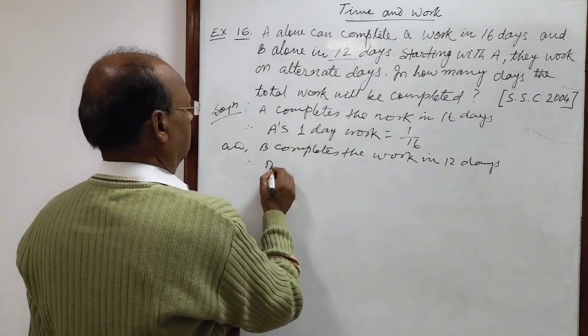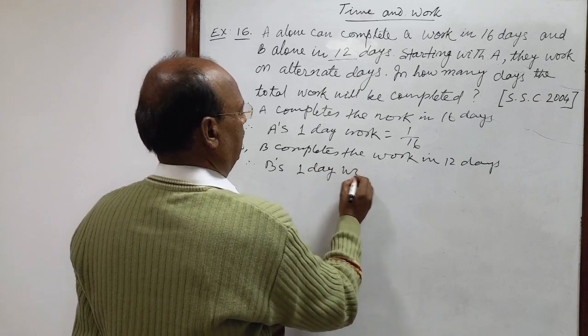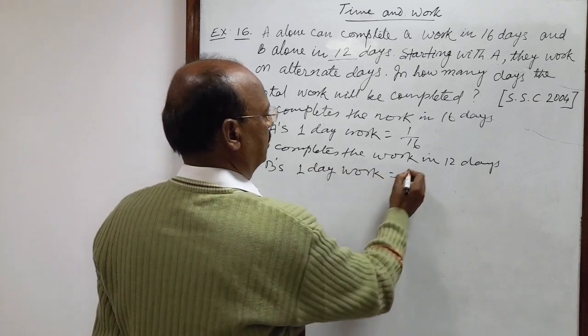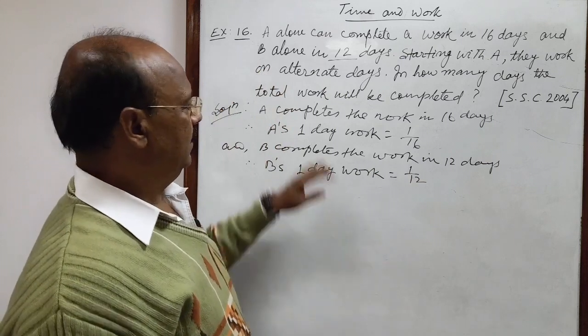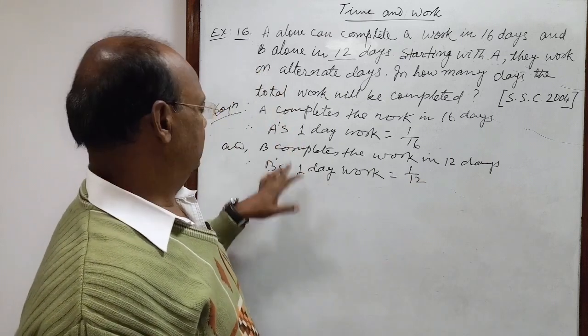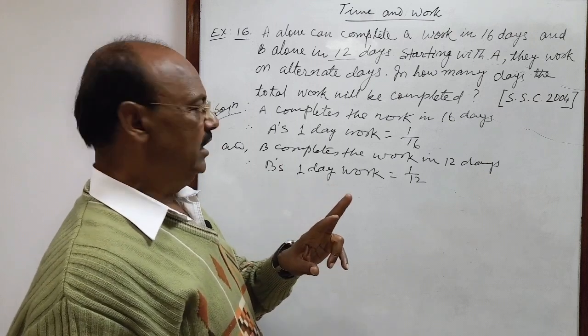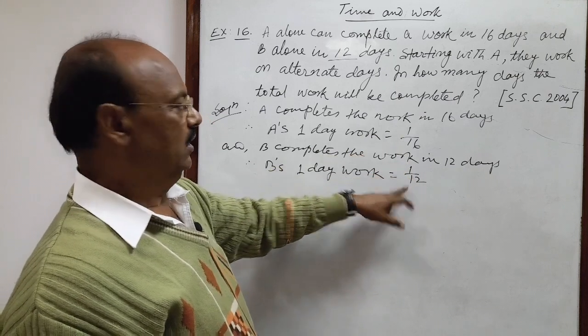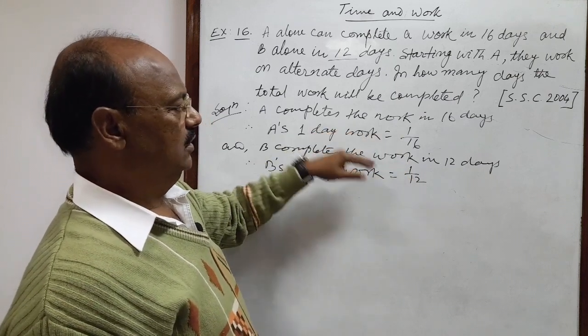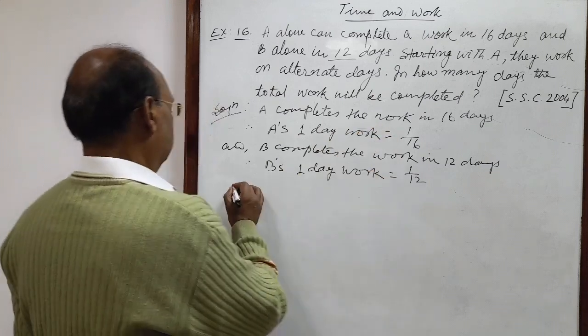Therefore B's one day work is 1/12. First day A works, second day B works. So in two days total amount of work done will be 1/16 plus 1/12. This is work done on first day and work done by B on second day.